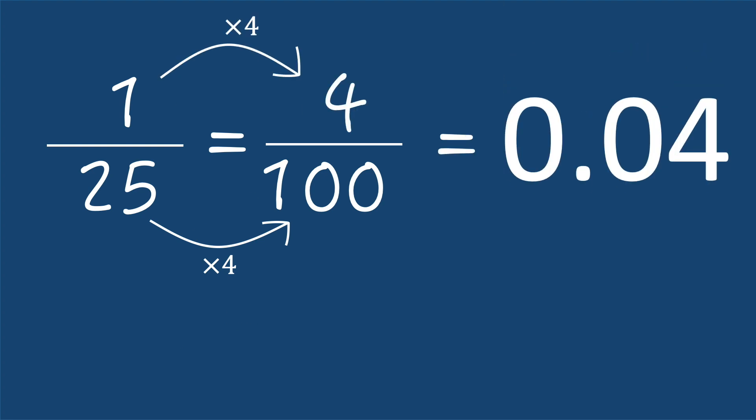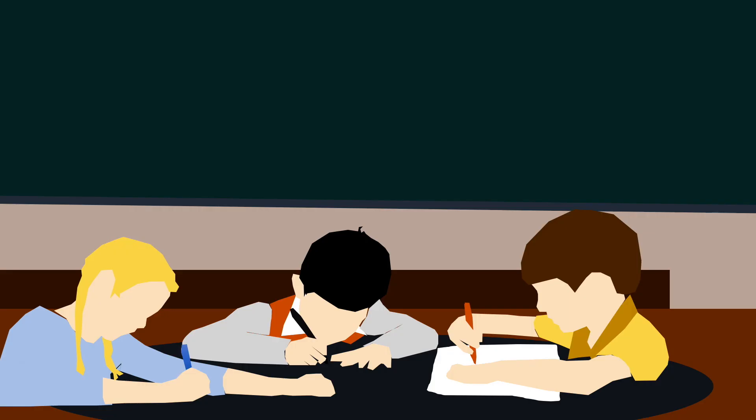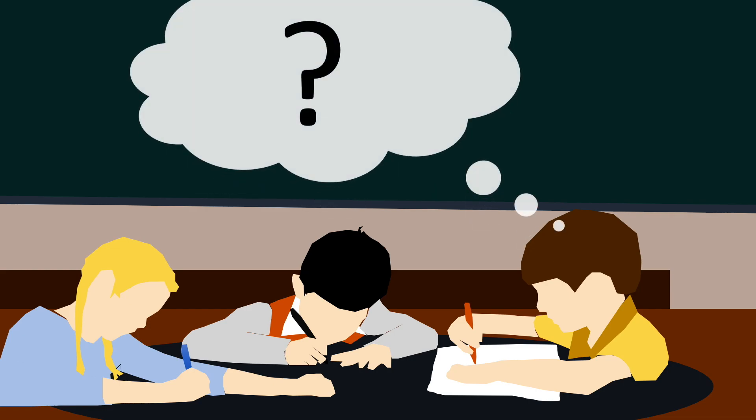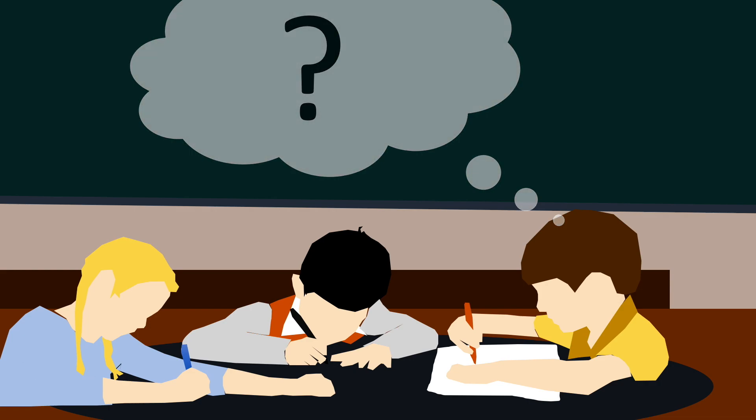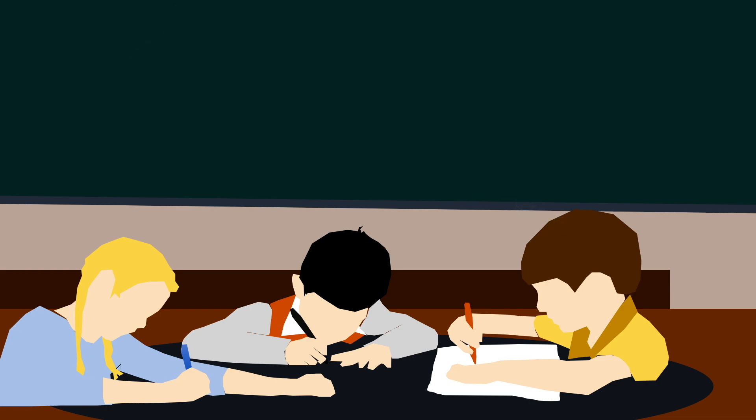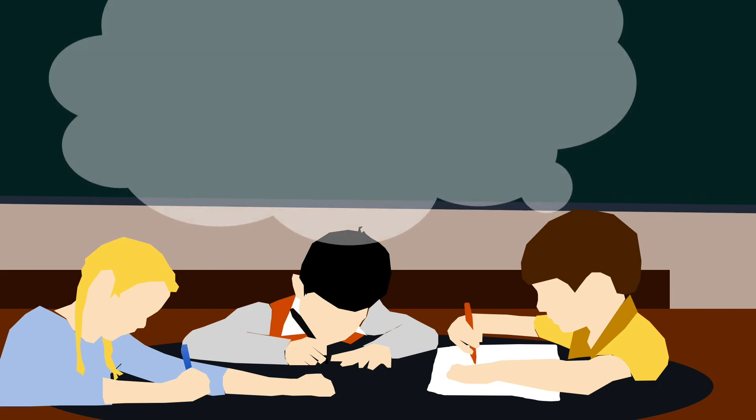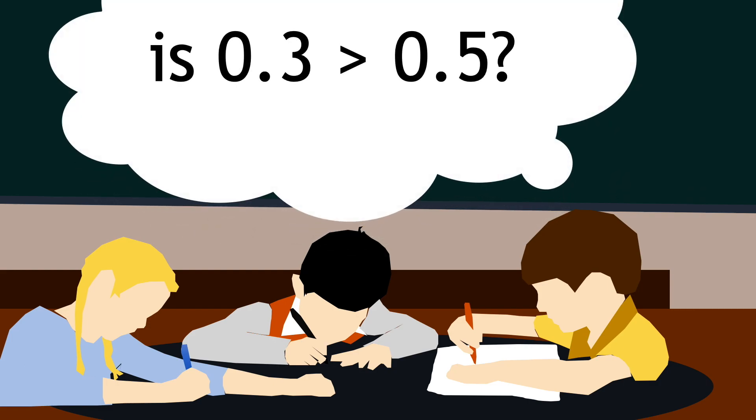But then a third issue that we can face when it comes to decimals, is that often having just come to terms with fractions, we can start to get our intuition mixed up. We use denominator thinking, and start to get the impression that three-tenths is larger than five-tenths, because a third is larger than a fifth.